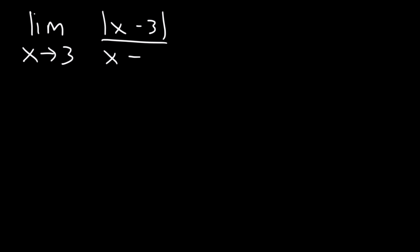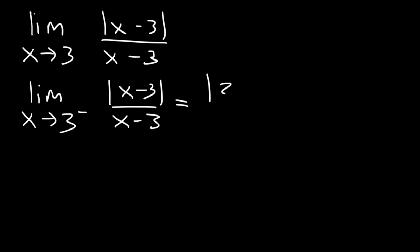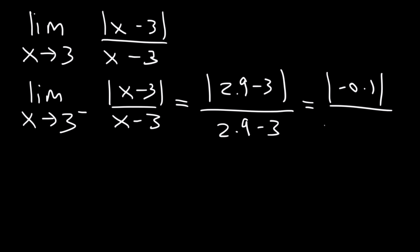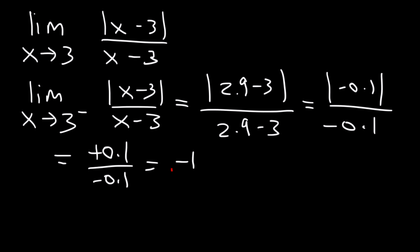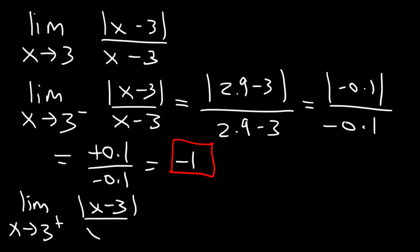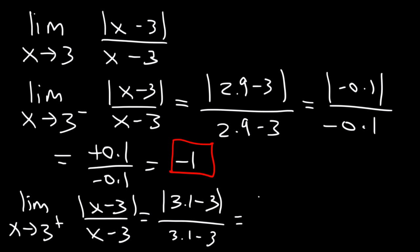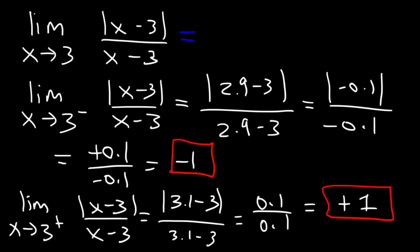Now, what about the limit as x approaches 3 from either side? We need to evaluate the left side and the right side. From the left, plug in 2.9: the absolute value of 2.9 minus 3 divided by 2.9 minus 3 gives positive 0.1 divided by negative 0.1, which equals negative 1. From the right, this becomes positive 0.1 over 0.1, which is positive 1. Because the left and right side limits do not match, this limit does not exist.